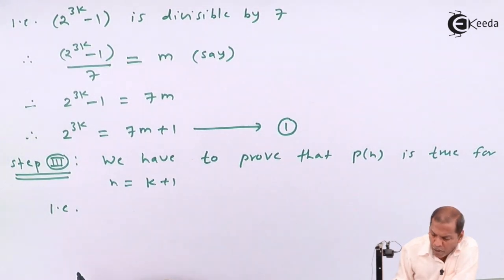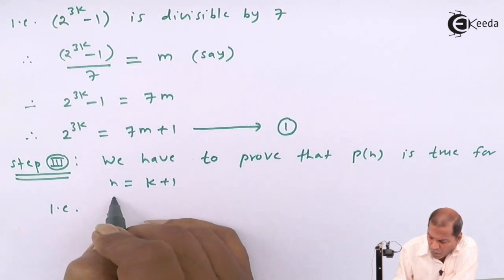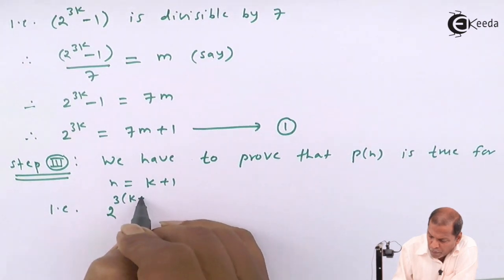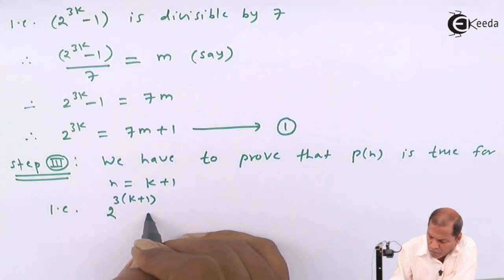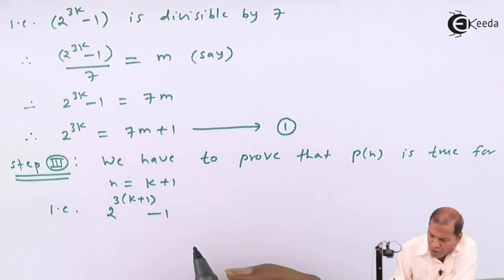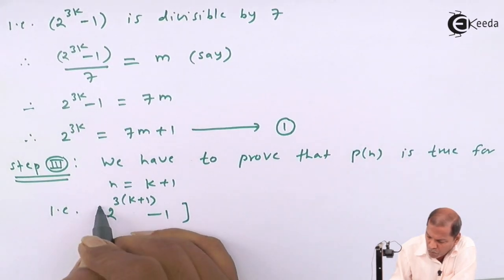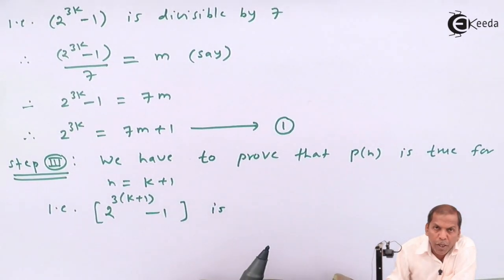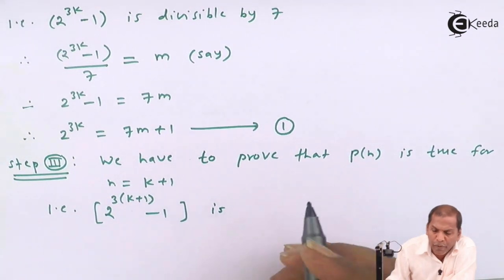That is 2 raised to 3 times (k plus 1) minus 1 is divisible by 7.